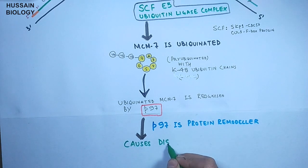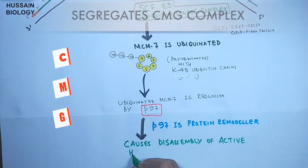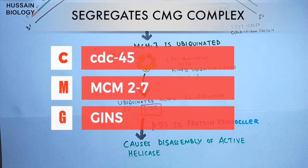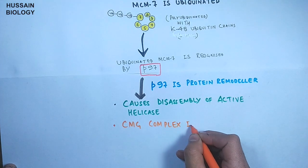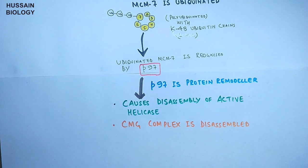And in here it causes the disassembly of active MCM complex, means it segregates the MCM complex. So with this, the helicase complex that is the CMG complex is no more in its active bound state, and all its cofactors and other proteins are removed from the DNA strand, thus terminating the DNA replication.